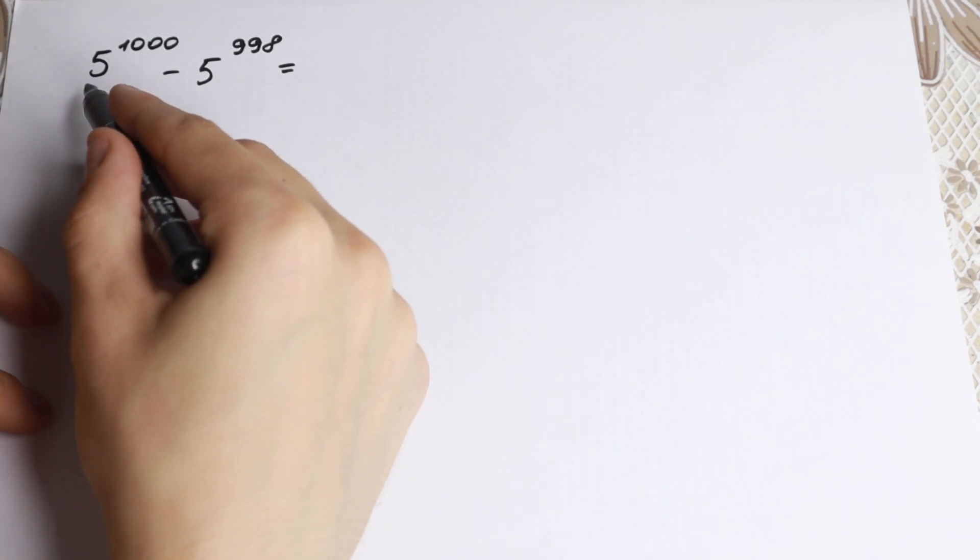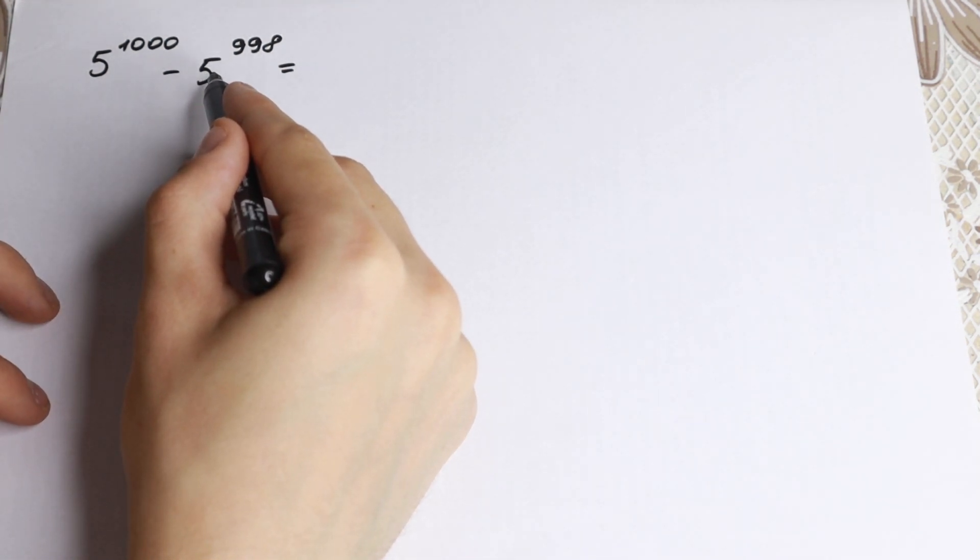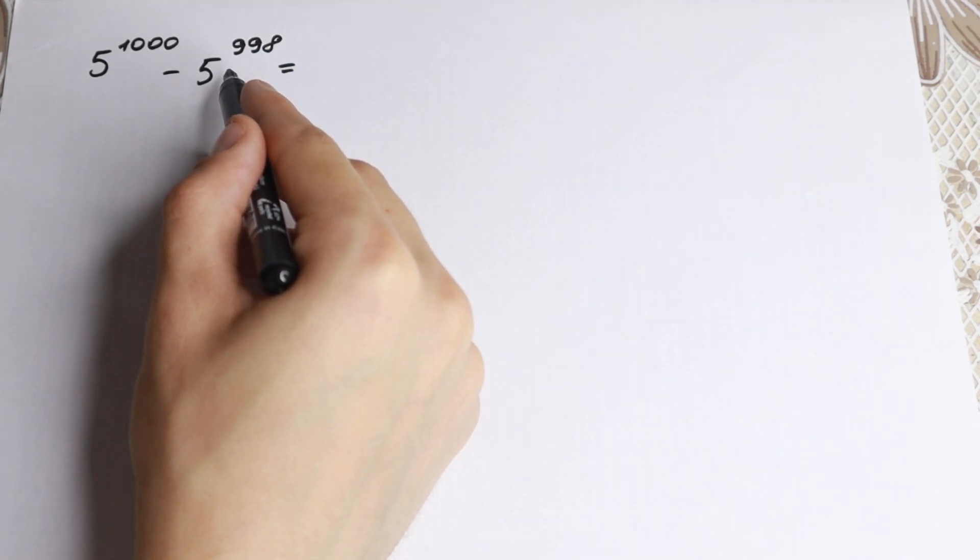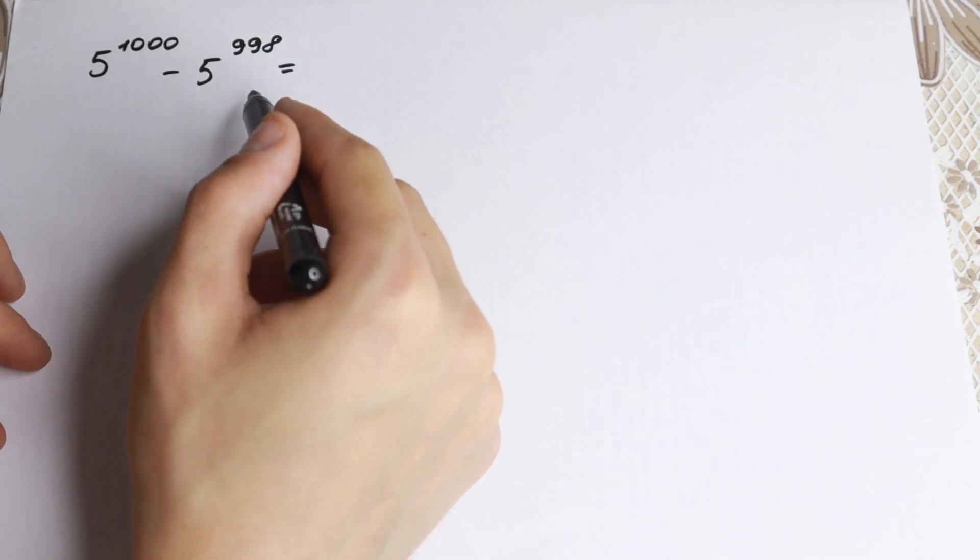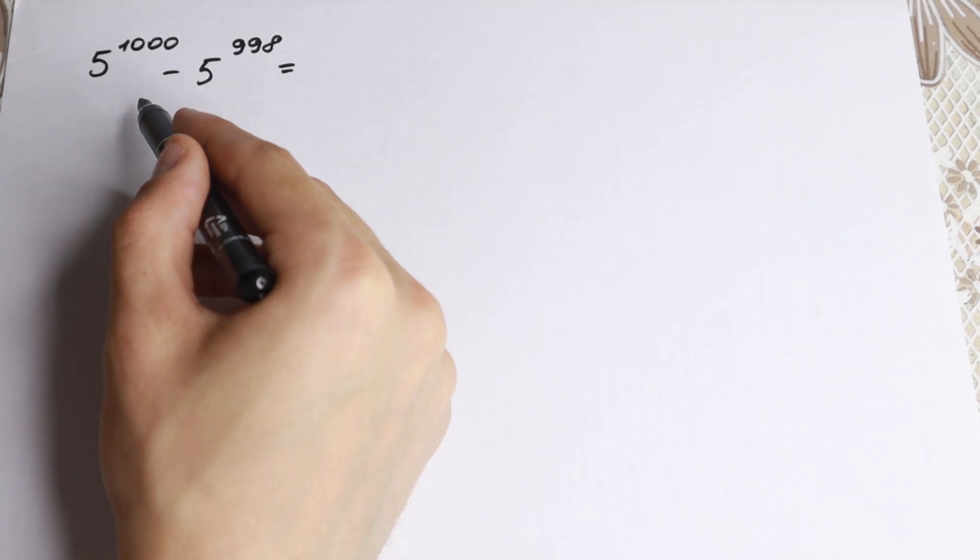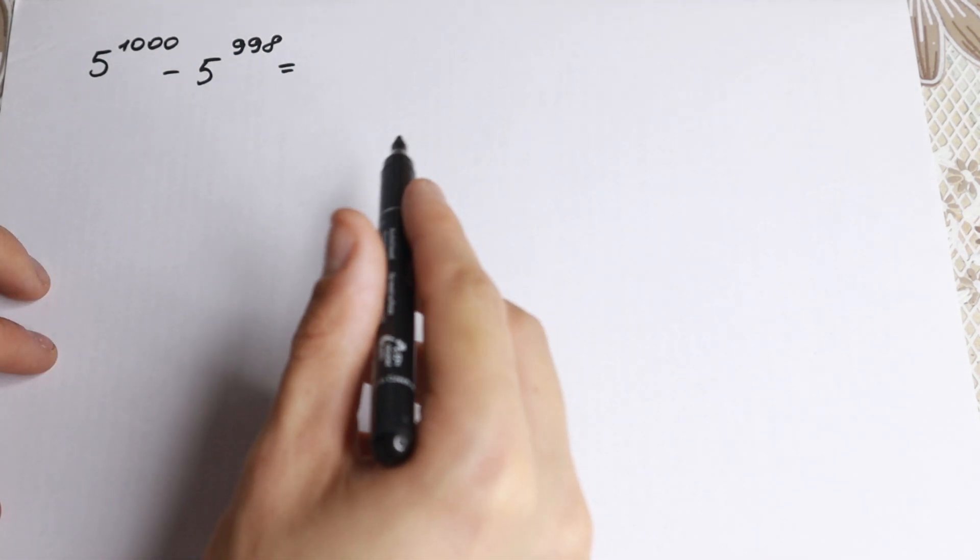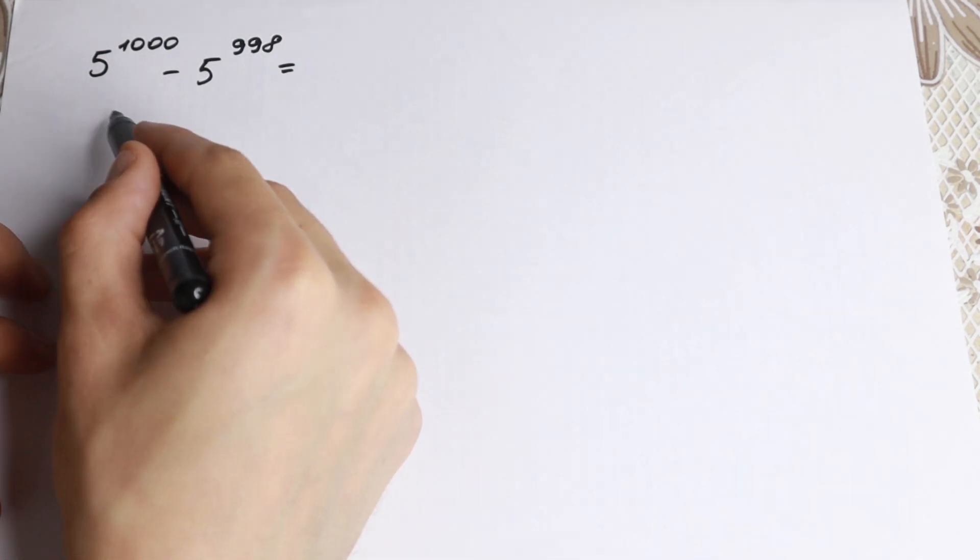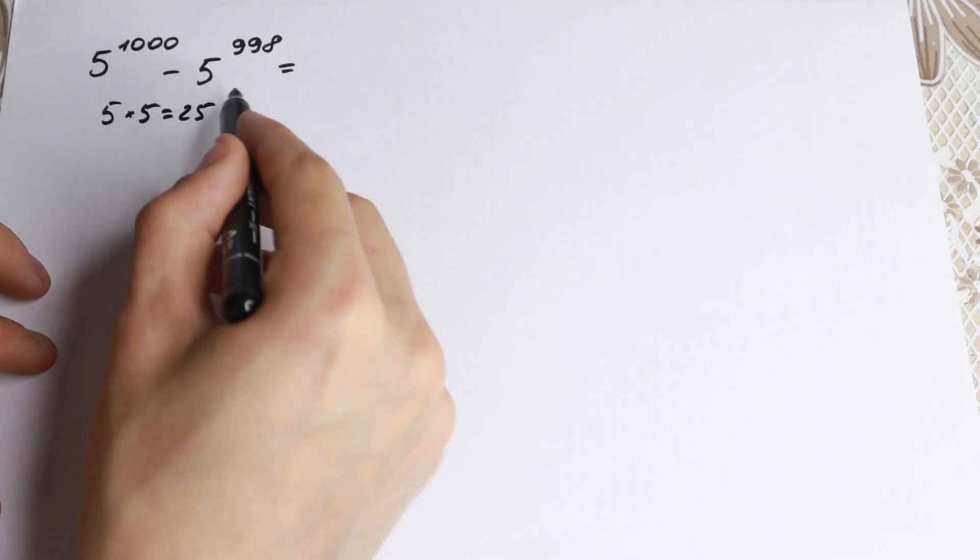Today we need to solve this: 5 to the power 1000 minus 5 to the power 998. The first way students try is to raise 5 to the power 1000. But a lot of students make this mistake because they try to calculate it directly—5 times 5 equals 25, which is 5 squared.